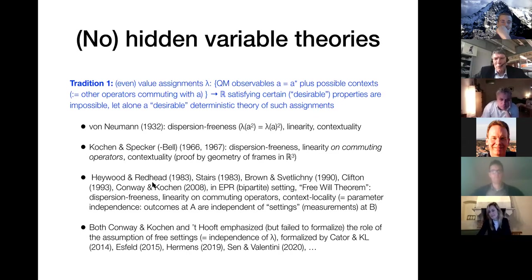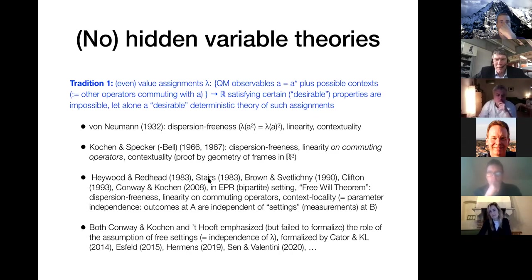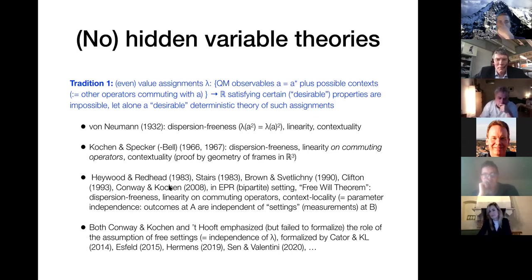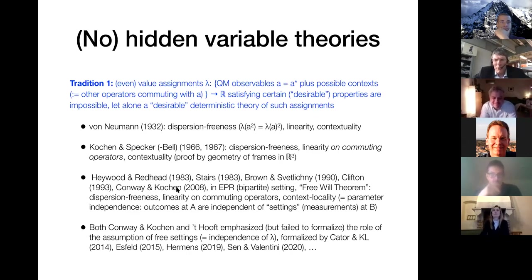The next step is the so-called Free Will Theorem, which is almost completely already in early papers by Heywood and Redhead, Stairs, Brown and Svetlichny, and Clifton, but was made famous by Conway and Kochen. Some people have the ability to attract attention. Because they called it the Free Will Theorem it got a lot of publicity. It's exactly in the same tradition.